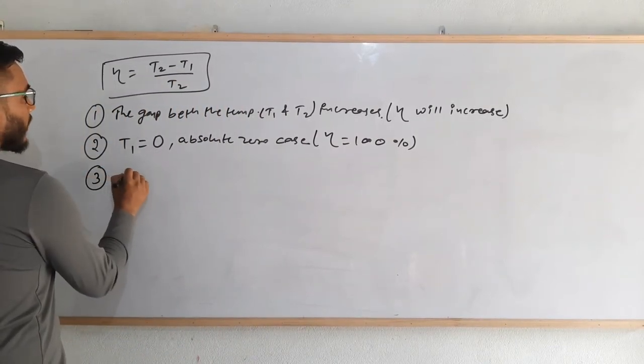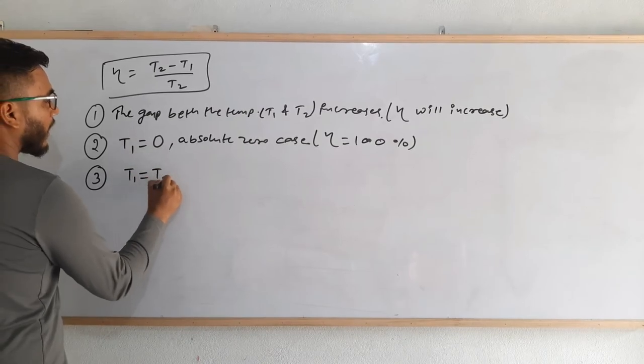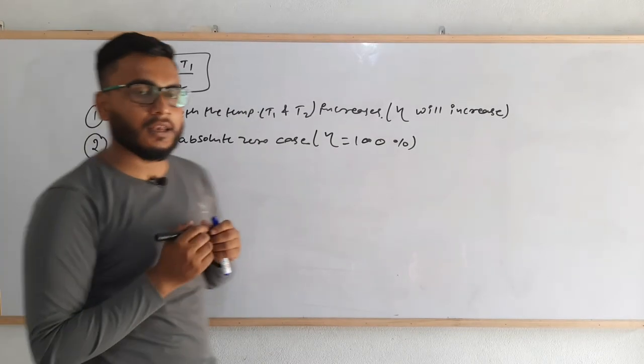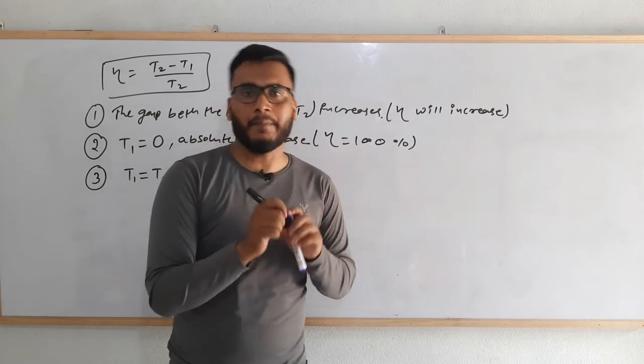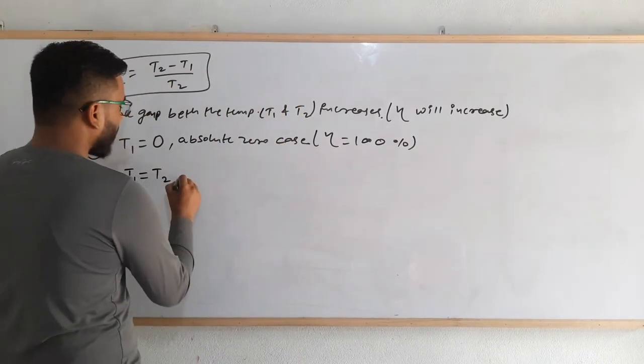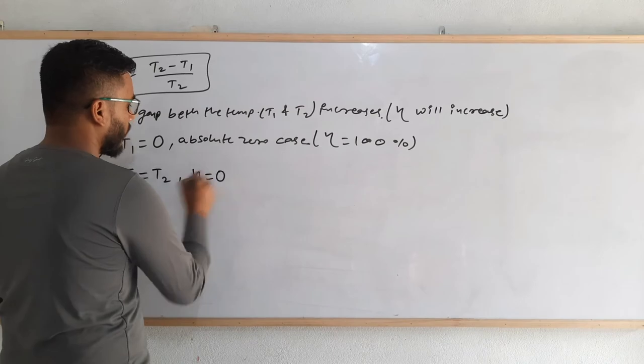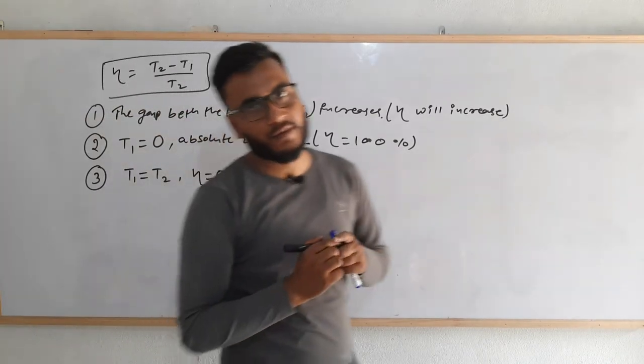And the third case is: what if the temperatures T1 and T2 are equal? That is, the engine is working at the same temperature. Then in this particular case, eta will be equal to zero. That means there won't be any efficiency and the machine will not work.